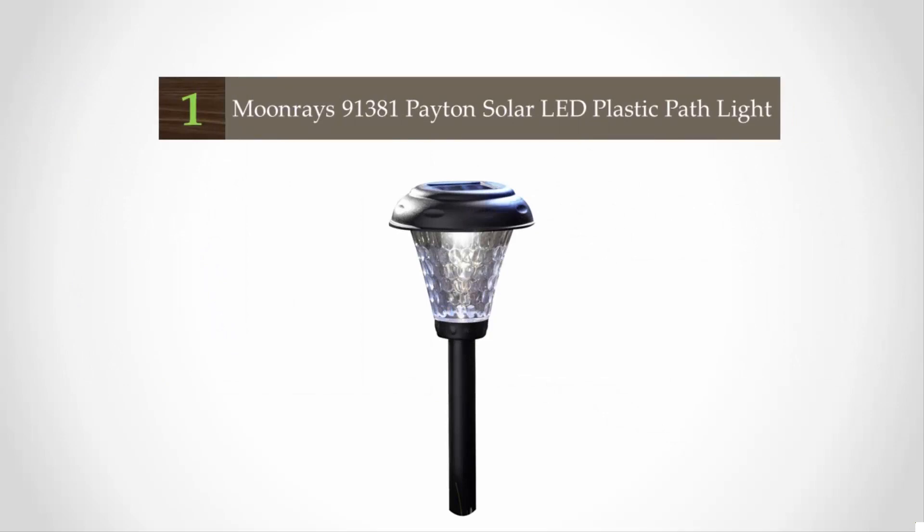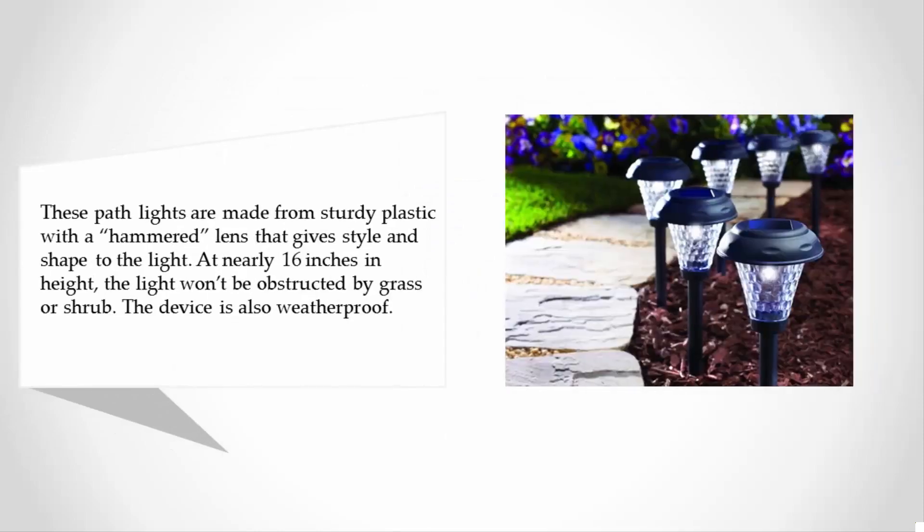Coming in at number one of our list, these path lights are made from sturdy plastic with a hammered lens that gives style and shape to the light. At nearly 16 inches in height, the light won't be obstructed by grass or shrub. The device is also weatherproof.